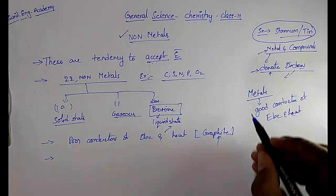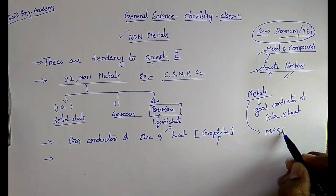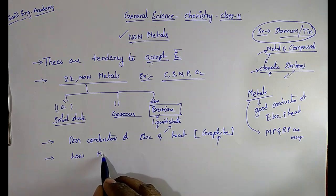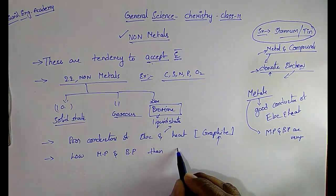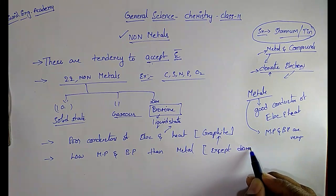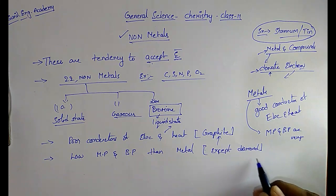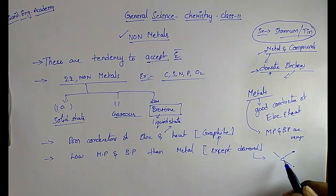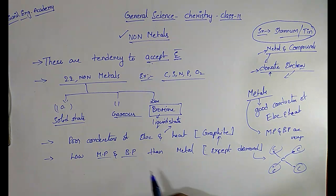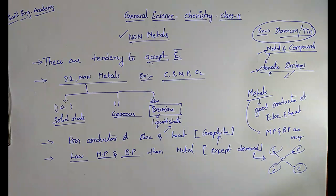Metals have very high melting and boiling points. But non-metals have low melting points and low boiling points compared to metals. The exception here is diamond, because each carbon in diamond is bonded with four other carbons, making them strongly bonded — so diamond has very high melting and boiling points.